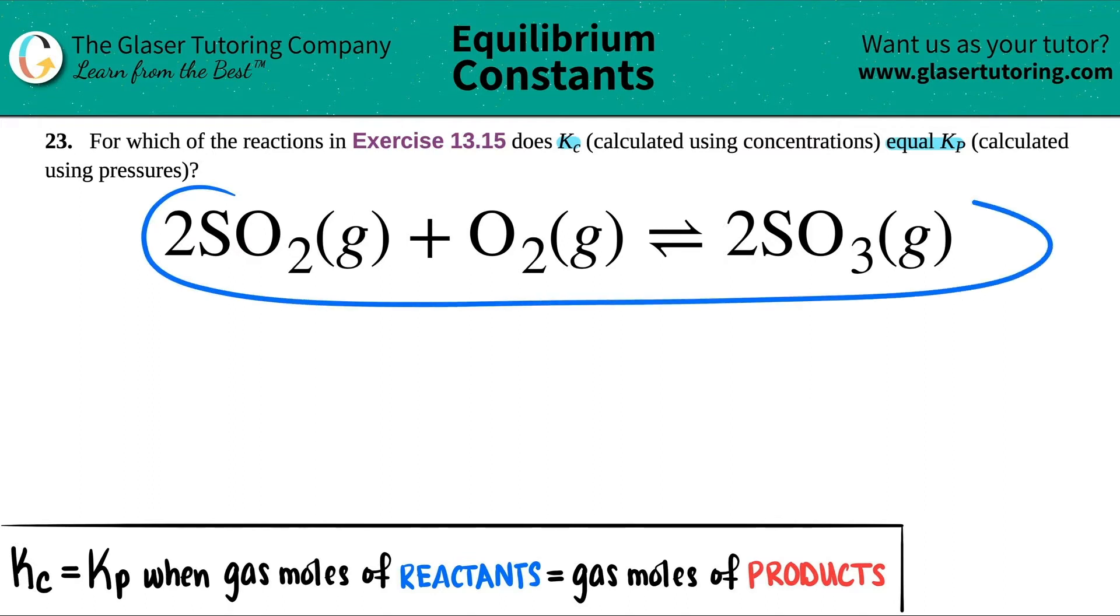So I have a balanced equation here. In this case, we have to find out if 2SO2 gas plus O2 gas, which comes to equilibrium with 2SO3 gas, does Kc equal Kp? And maybe I'll put a question mark here. Yes or no?